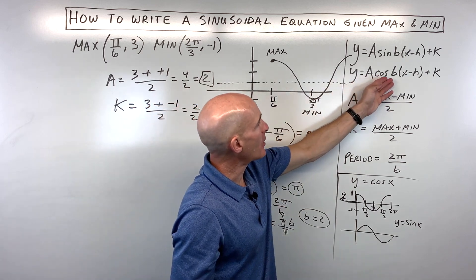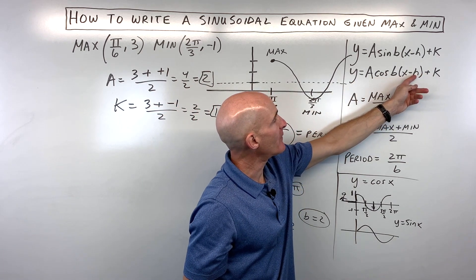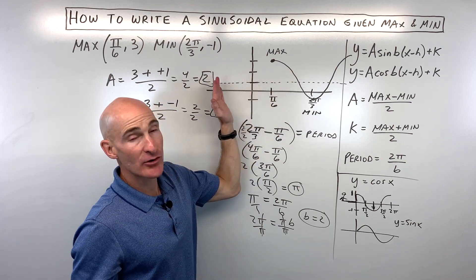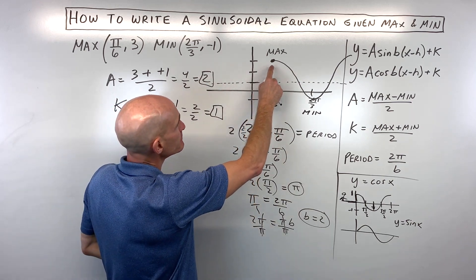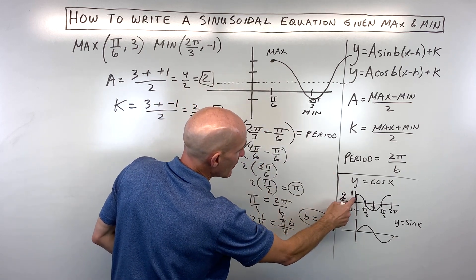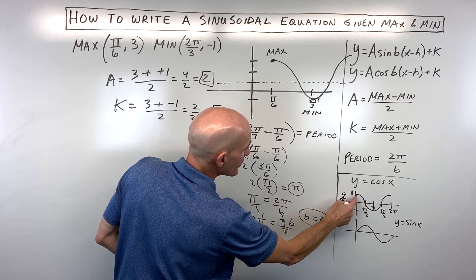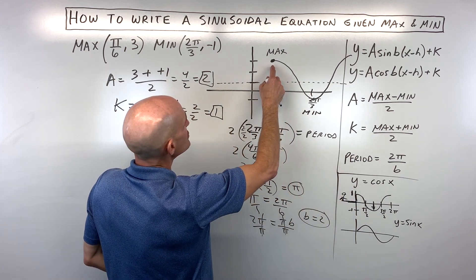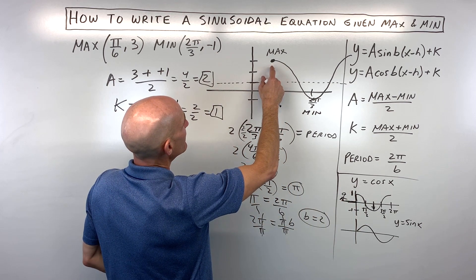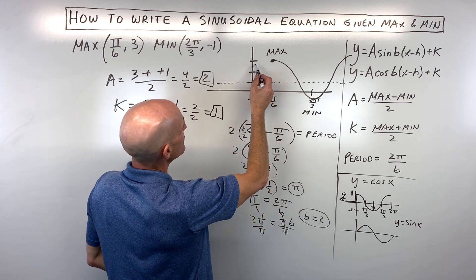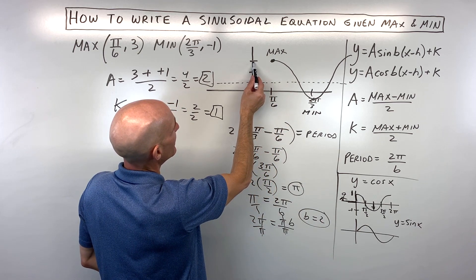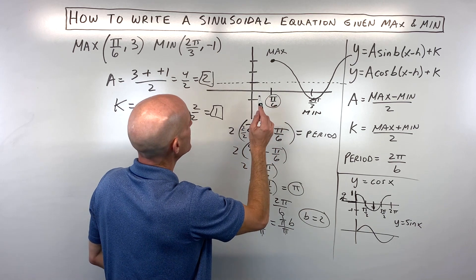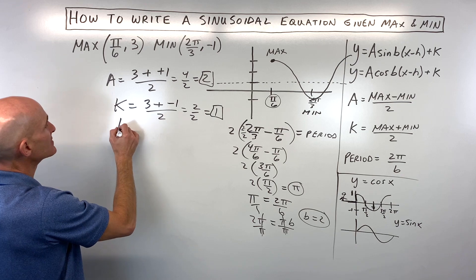So we've got our a, our b, and our k. How do we find our h value? Remember that h is the horizontal shift. It's our phase shift. And again, we said that cosine, we're going to work with that one first. Cosine starts right here at the maximum, when x is 0, it's at that high point. So, how do we get from where this graph would normally start, which would be right here? It's been shifted right, pi over 6. So let's go ahead and put everything together now.